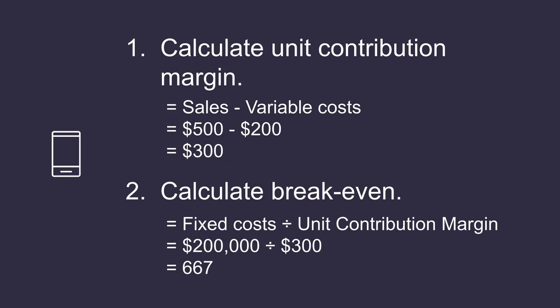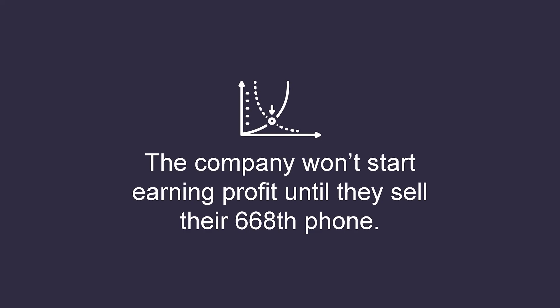Now we can calculate how many units the company would need to sell each month to cover all their costs, which is their break-even point. Using the formula from earlier, we take the total fixed costs for the period — $200,000 — and divide this by their unit contribution margin of $300. This gives us a break-even point of 667, which is the number of phones the company would need to sell to break even each period. This is extremely important for the company to know, since they now know exactly how many phones they need to sell to cover all their costs each month, and that they won't start earning profit until their 668th phone.